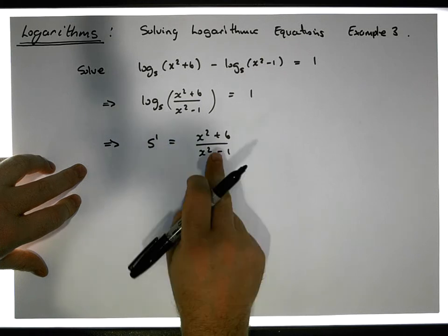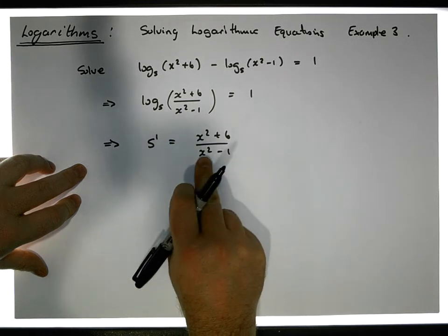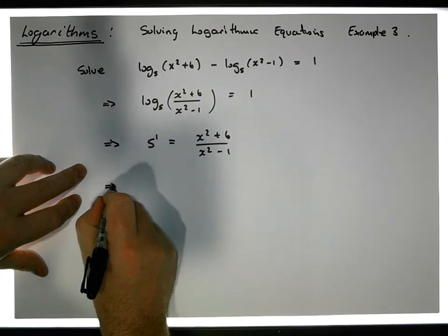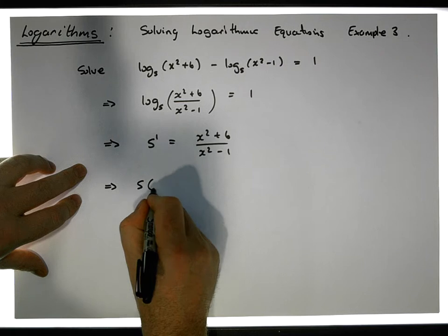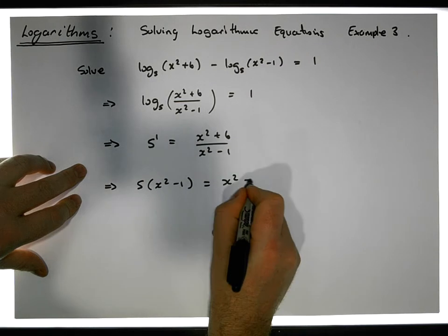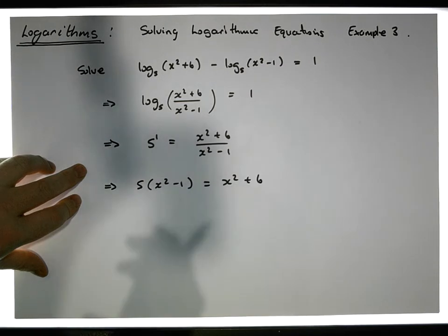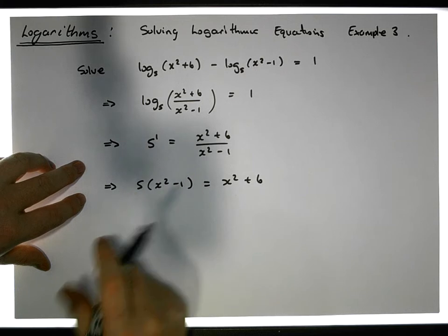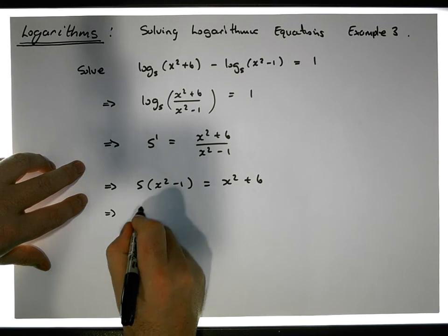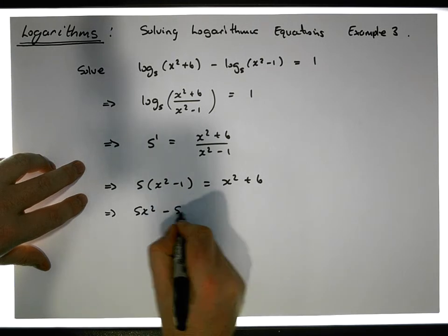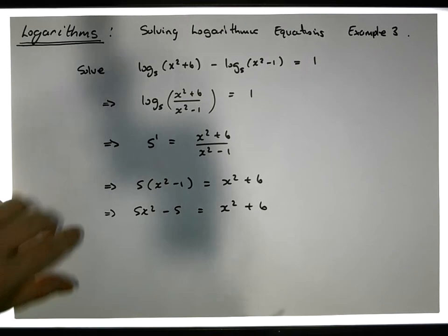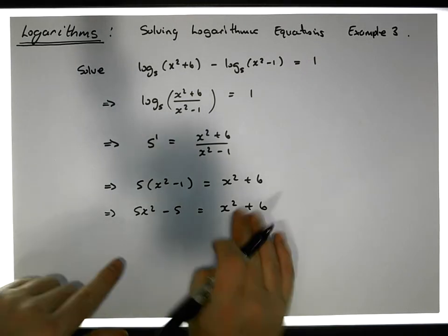That gives us 5. Multiplying across by (x squared minus 1), this implies that 5 times (x squared minus 1) must be equal to x squared plus 6. Multiplying through by the 5, this implies that 5x squared minus 5 is equal to x squared plus 6.